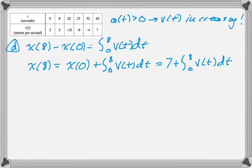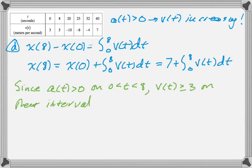Make sure you use that. If you don't use that, you're going to get this one wrong. So, it's really 7 plus the integral from 0 to 8. Now, let's see if we can't use the fact that V(t) is increasing to make some sense. So, a(t) is greater than 0, which means that V(t) is increasing, so it must be greater than or equal to 3 on that entire interval, because at 0, V(t) is 3.